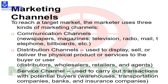To reach a target market, the marketer uses three kinds of marketing channels. The first is the communication channel — to make customers aware of our product and convince them, we use newspapers, magazines, television, radio, mail, telephone, billboards, etc. The second is the distribution channel — used to display, sell, or deliver the physical product or services to the buyer. This includes distributors, wholesalers, retailers, and agents. Through the distribution channel we physically deliver the product to the customer.